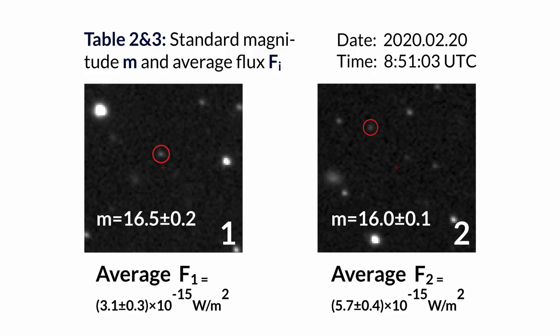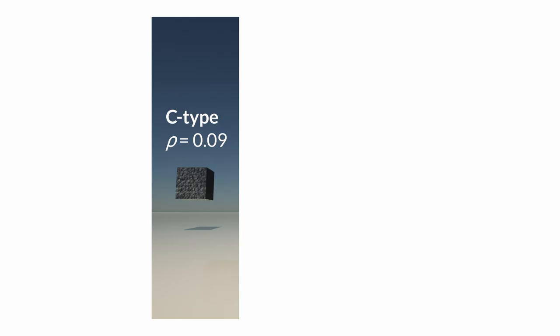Albedo is the proportion of incident light that is reflected by a surface. Three sample albedo values corresponding to three common asteroid types were used to calculate the asteroid sizes. Carbonaceous-type asteroids are made of darker materials. They tend to be less reflective.